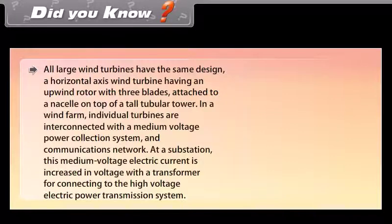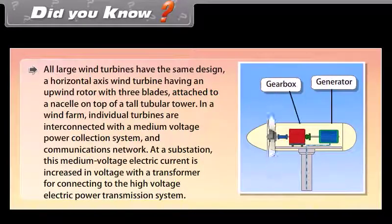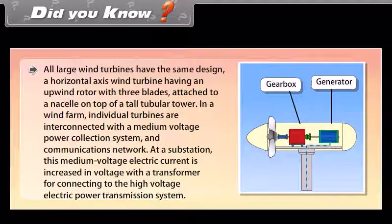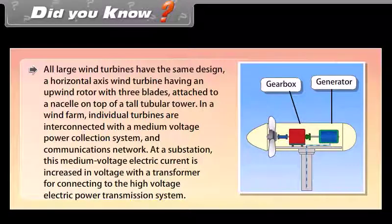Did you know? All large wind turbines have the same design: a horizontal axis wind turbine with an upwind rotor with three blades attached to a nacelle on top of a tall tubular tower. In a wind farm, individual turbines are interconnected with a medium voltage power collection system and communications network. At a substation, this medium voltage electric current is increased in voltage with a transformer for connecting to the high voltage electric power transmission system.